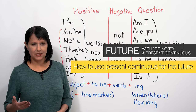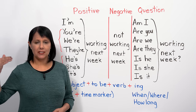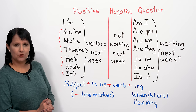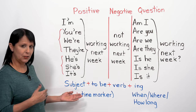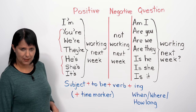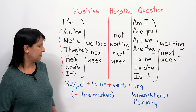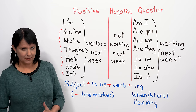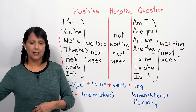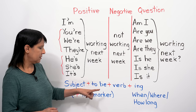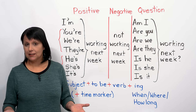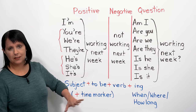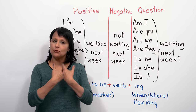Now let's look at the structure of the present continuous tense when used for the future. Our basic structure is: subject — I, you, we, they, etc. — plus the verb 'to be,' then the base form of the verb, plus 'ing.' And to all of that, we have to add a time marker — like 'next week,' 'next month,' 'next year,' 'on Monday.' This time marker often comes at the end, but sometimes at the beginning. Without it, it will just be present continuous talking about the present, not the future.